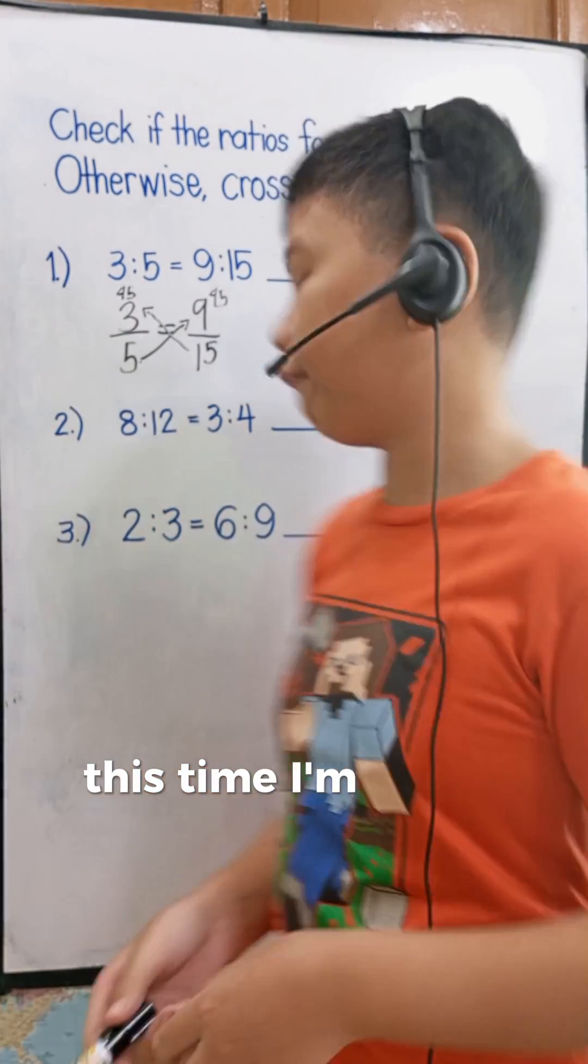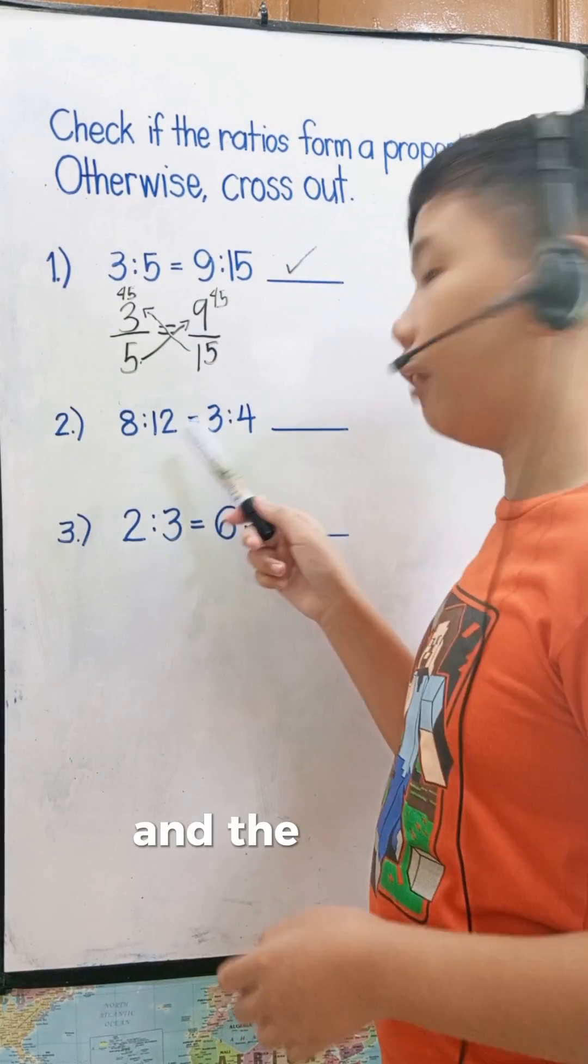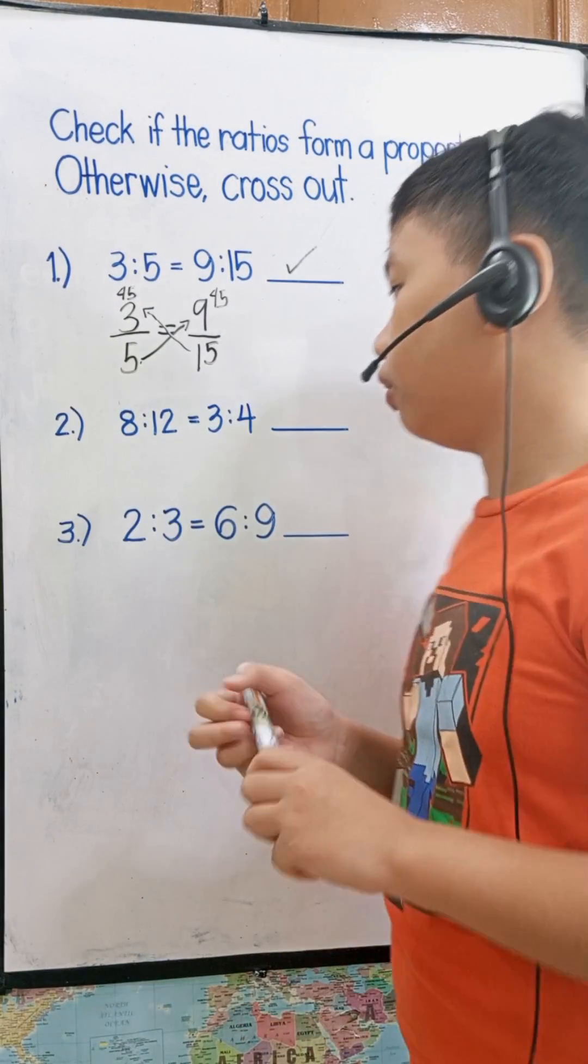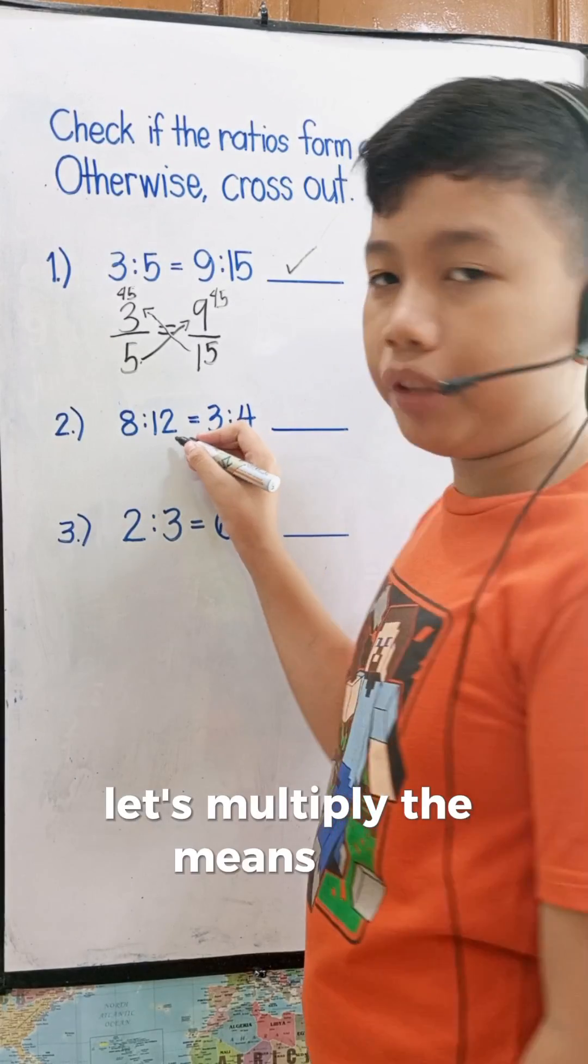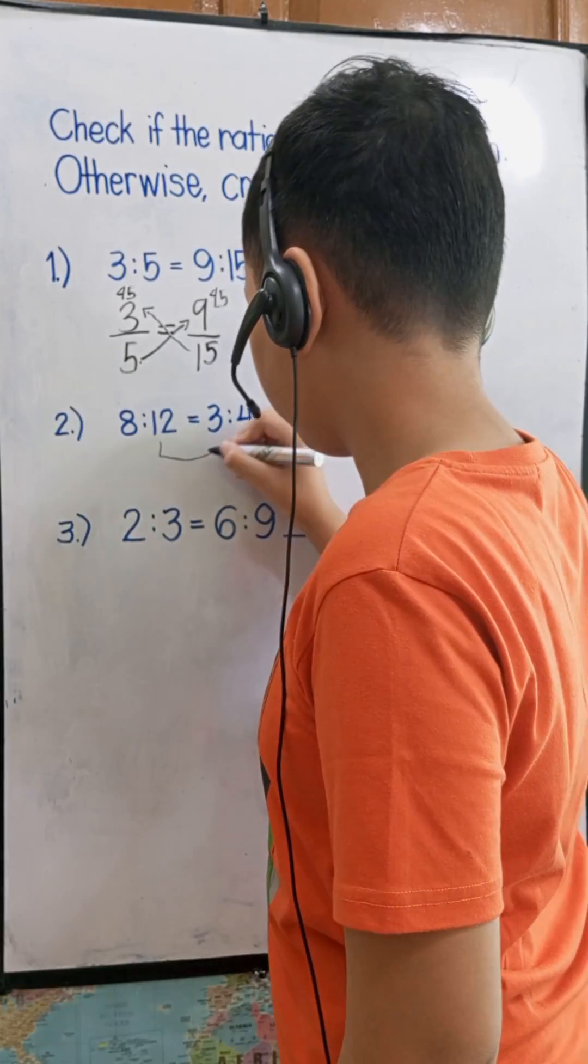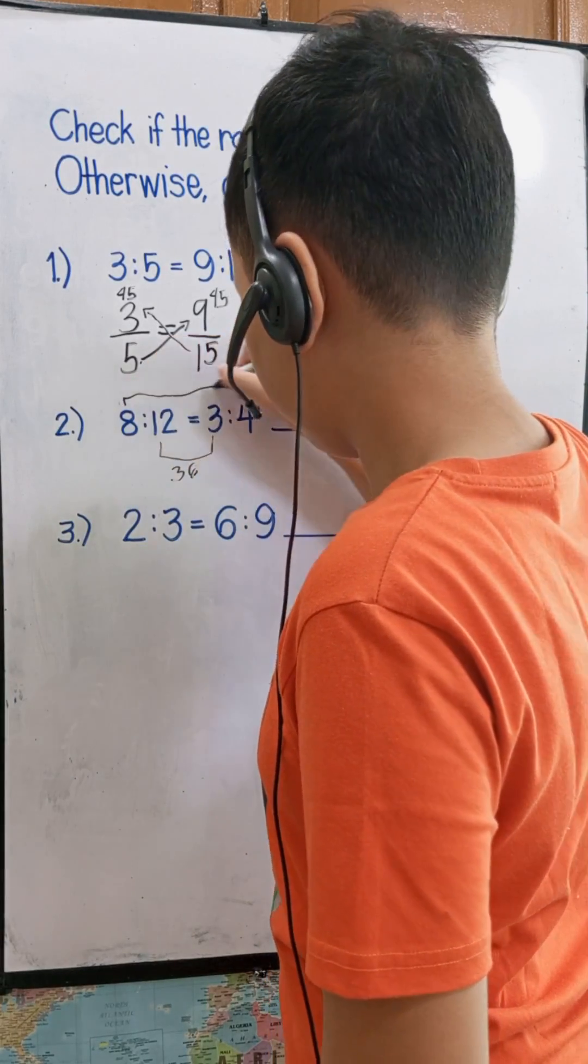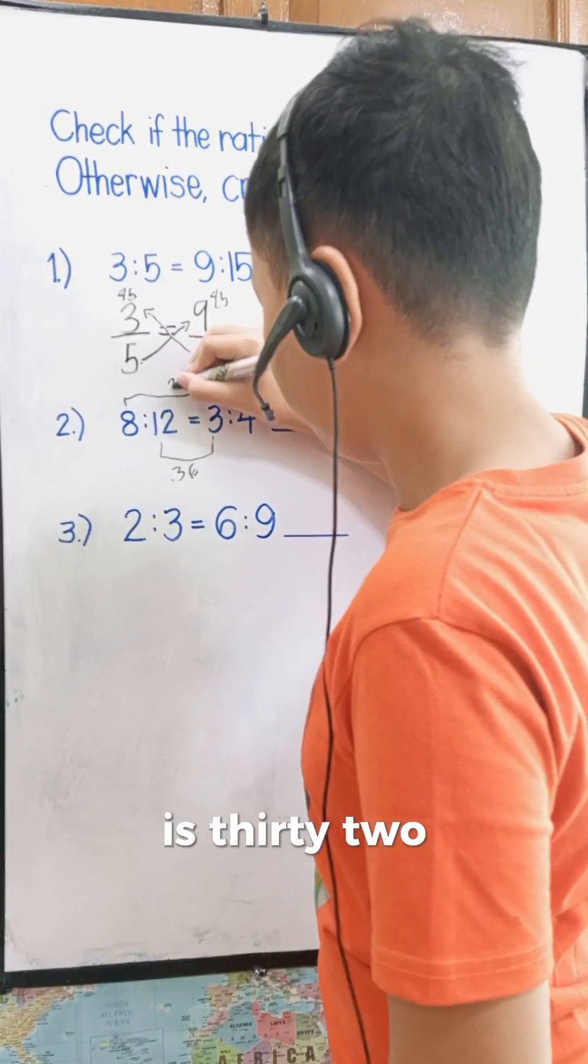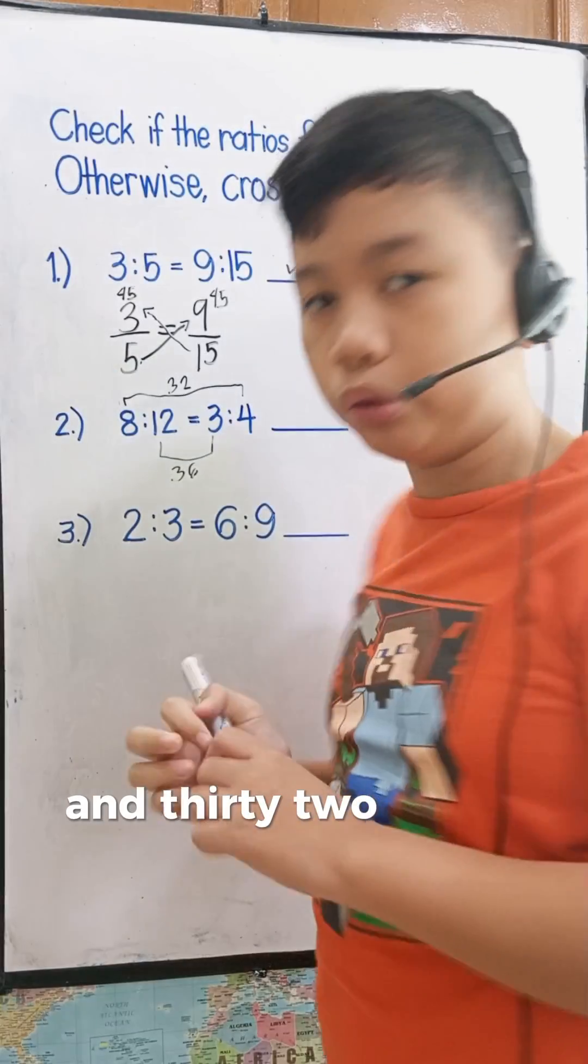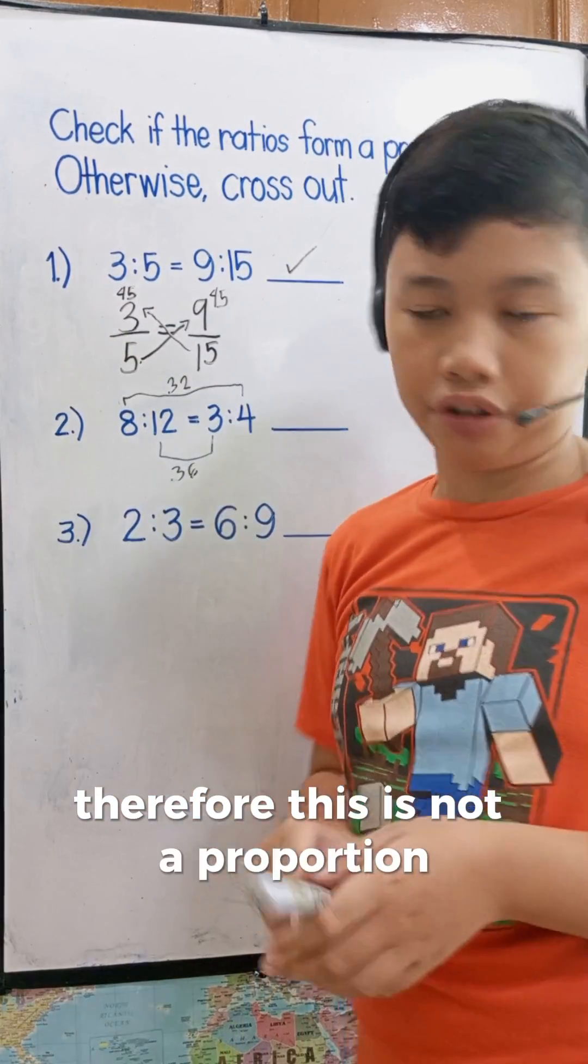Number two, I'm gonna show you another method. This time I'm going to multiply the extremes and the means. So let's multiply the means first: 12 times 3 equals 36, and 8 times 4 is 32. And 32 is not equal to 36, therefore this is not a proportion.